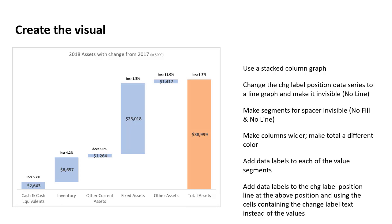The next step in labeling is to take that change-label-position data series — the invisible line — and add data labels to it. We position them above where the line is, placing them above each segment, and we select the text for the label from the series of cells we set up specifically for this purpose.